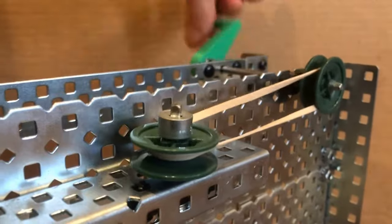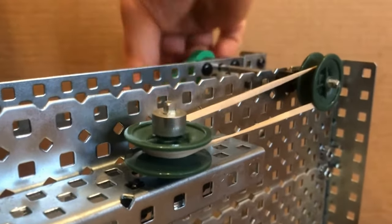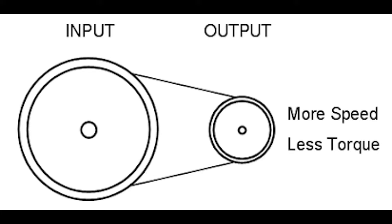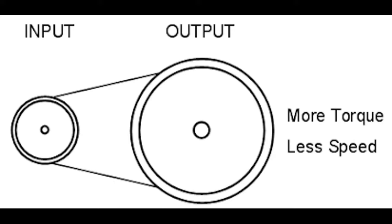The same torque and speed concepts from simple gears apply here too. A large input pulley and smaller output pulley mean decreased torque and increased speed, while a smaller input pulley and larger output pulley mean increased torque and decreased speed.